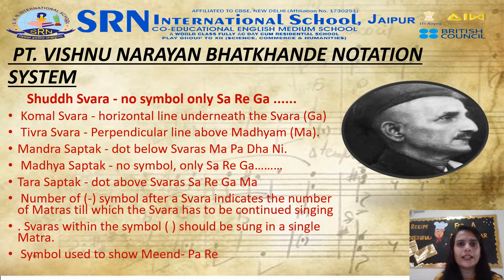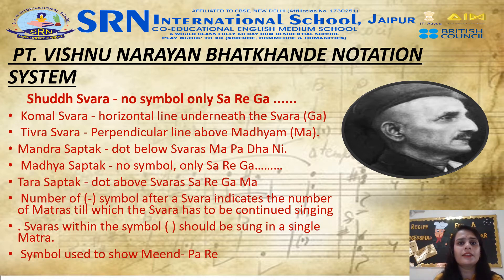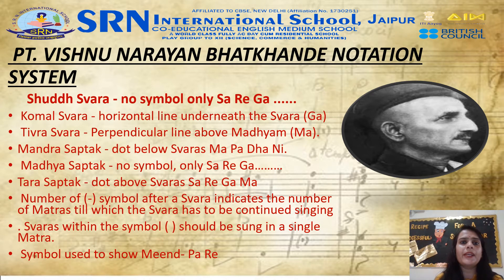Tivra Swara (Shuddh Ma with a standing line above it): shown with a standing line above Ma. Mandra Saptak: dot below the Swaras — Re-Ga-Dha-Ni. Madhya Saptak: no symbol, written as Sa-Re-Ga-Ma-Pa-Dha-Ni. Tar Saptak: dot above the Swaras — Sa-Re-Ga-Ma-Pa-Dha-Ni. The number of symbols after a Swara indicates the number of matras for which that Swara is to be continued.